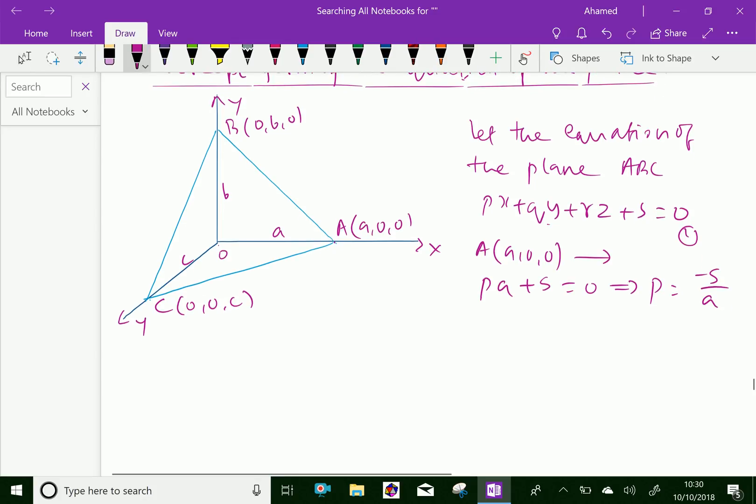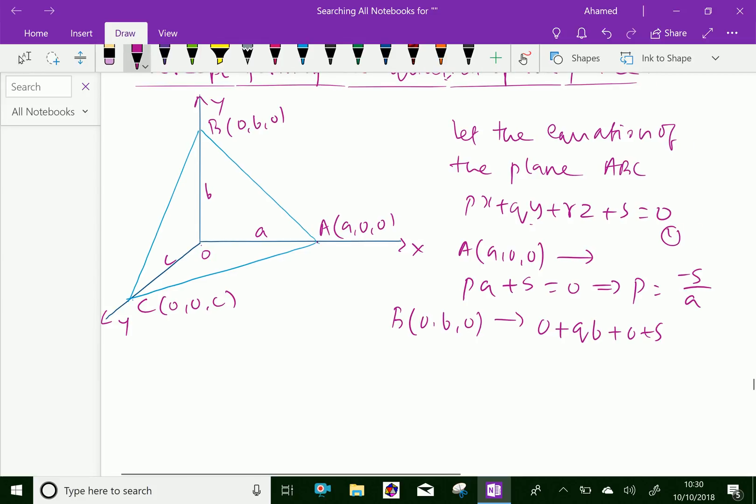Similarly, substitute the point B of 0, B, 0, which gives Q times B plus S equals 0. Therefore, you can say Q equals minus S over B.